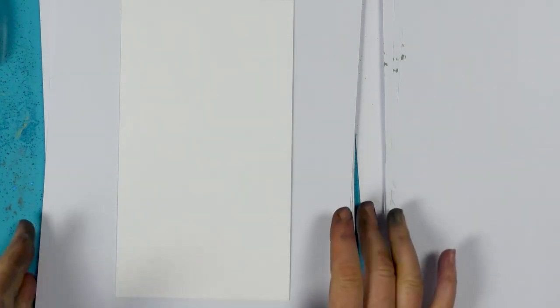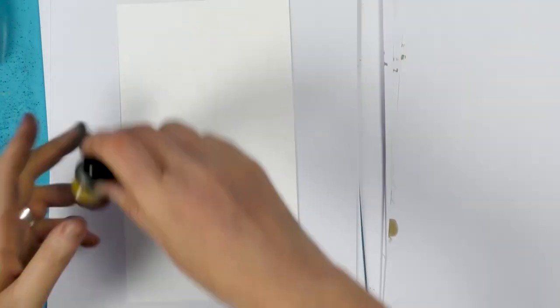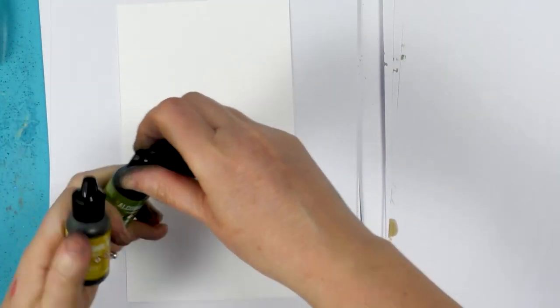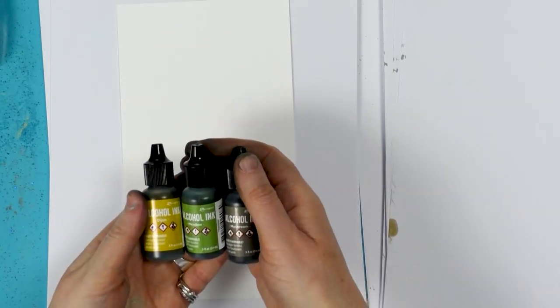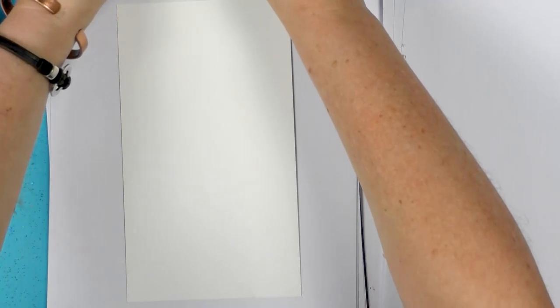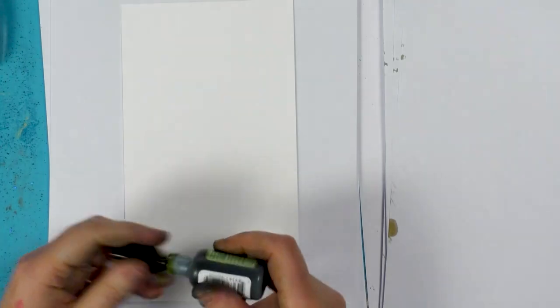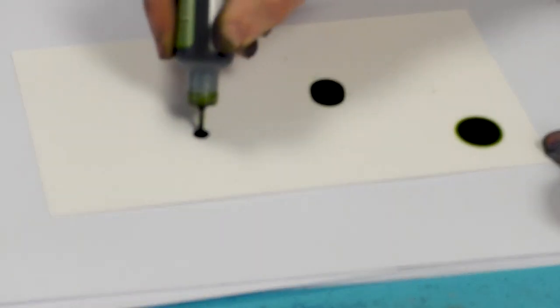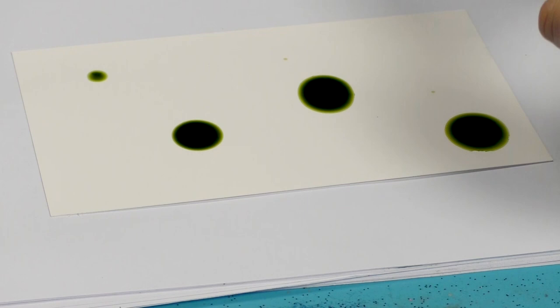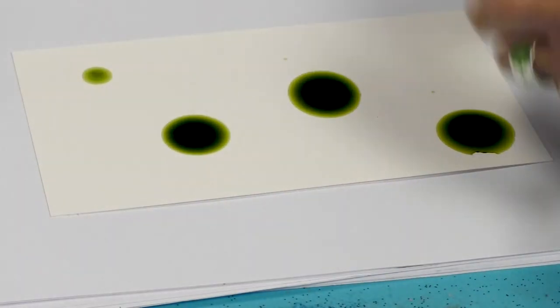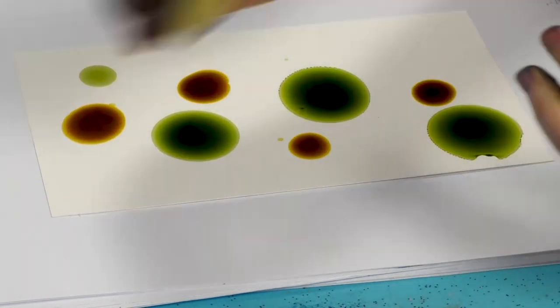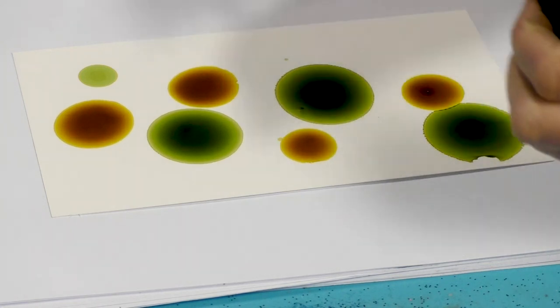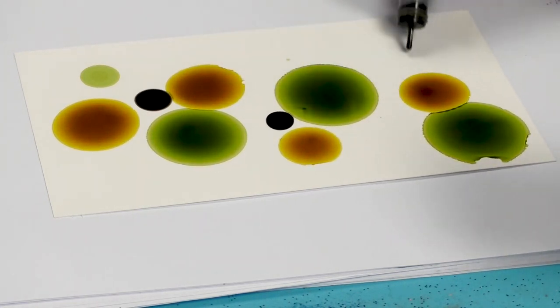We're going to be using the Yupo card and our alcohol inks. I picked three colors we're going to be using today: Mushroom, Meadow, and Dijon. So we're going to start with these lovely colors and I'm just going to put them randomly onto the card.